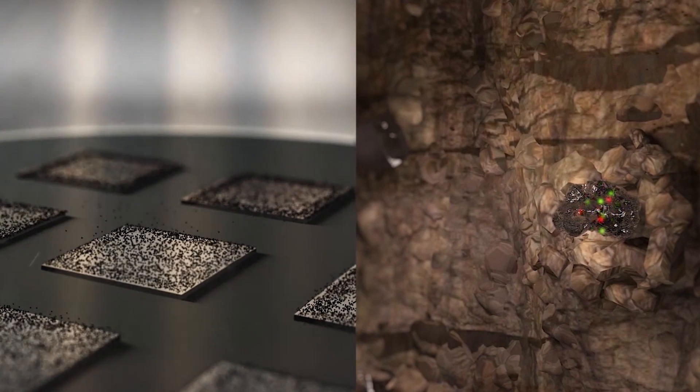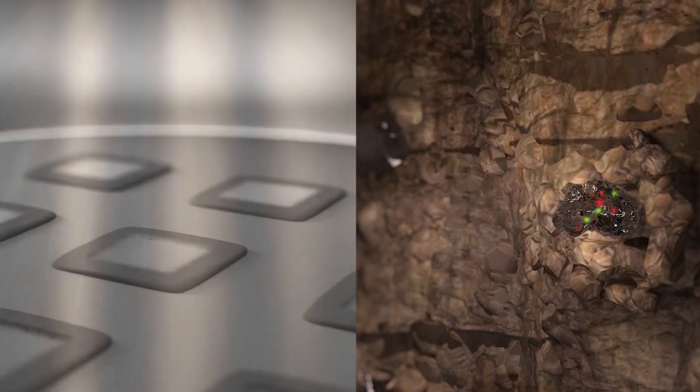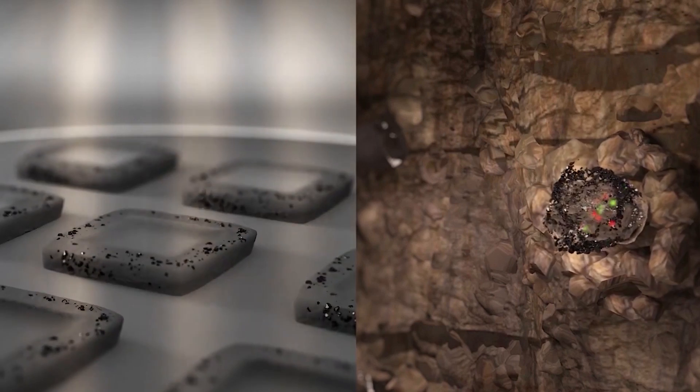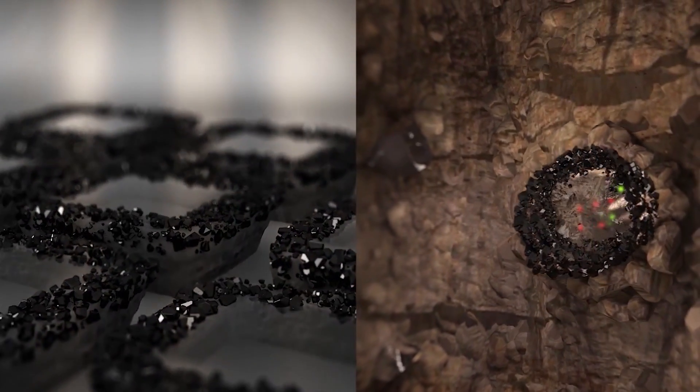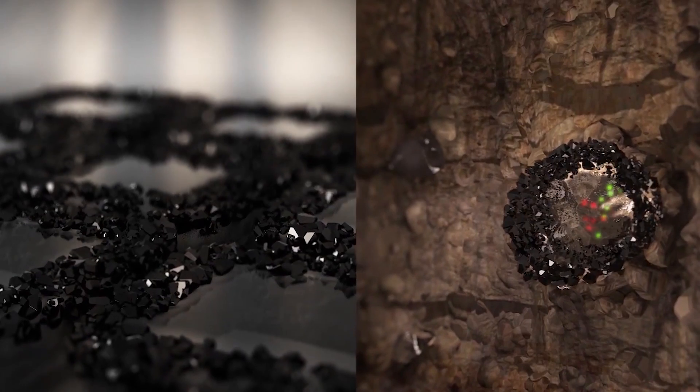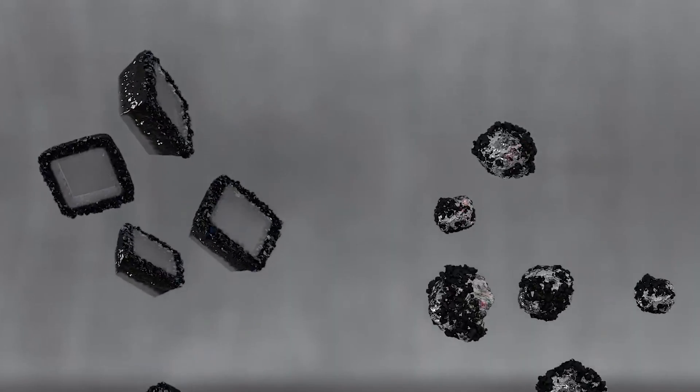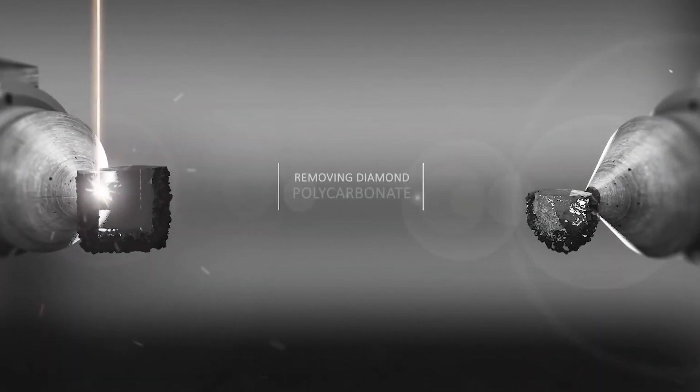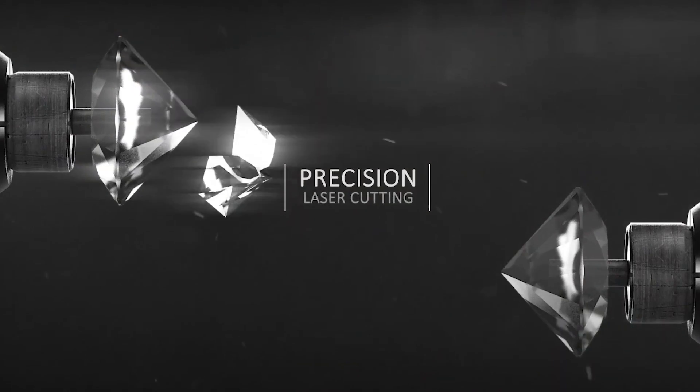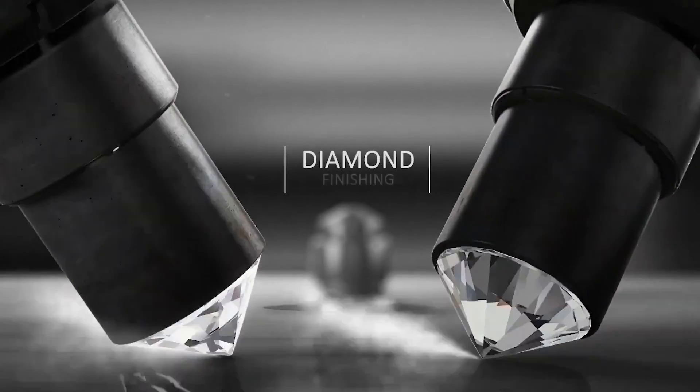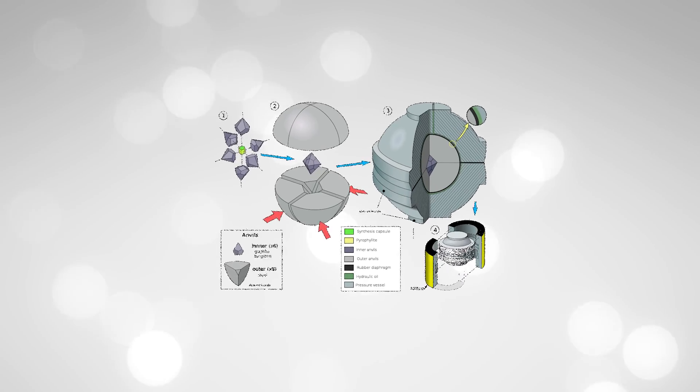The fascinating part of CVD is that it allows for precise control over the diamond's growth. This means that manufacturers can manipulate the conditions to influence the diamond's characteristics, including its size, shape, and even its color. This level of control is a significant advantage for those seeking customized diamonds for jewelry or industrial applications.